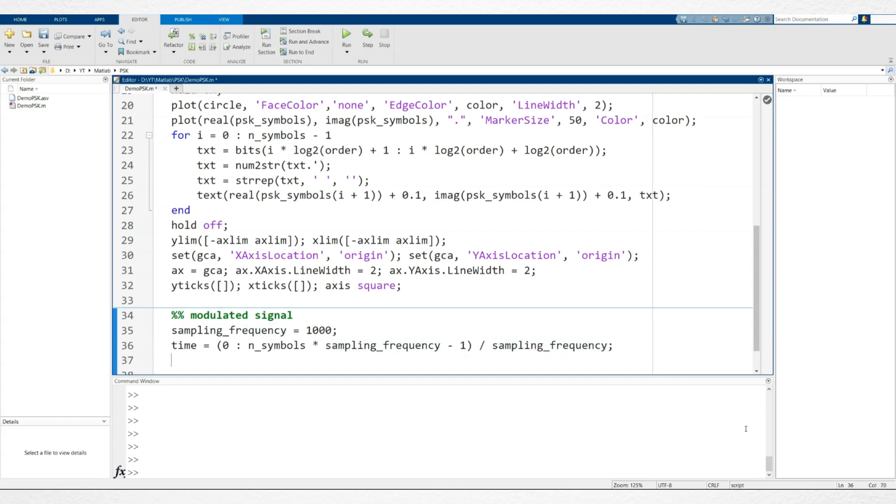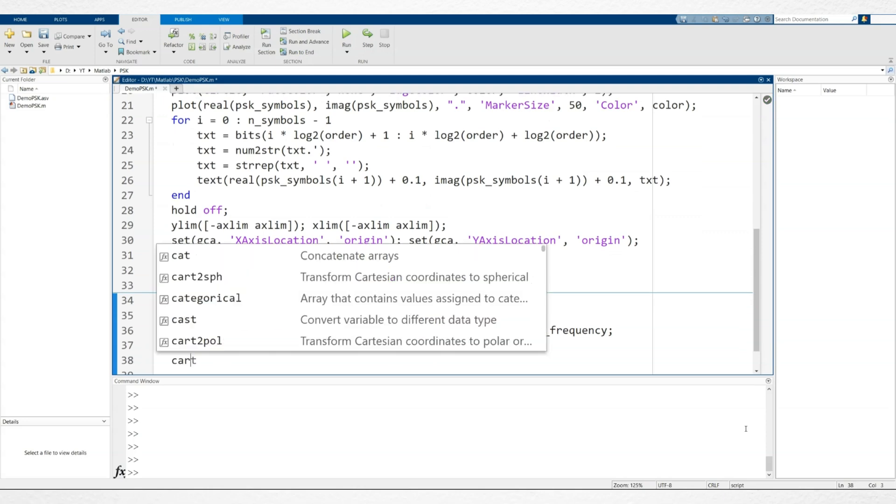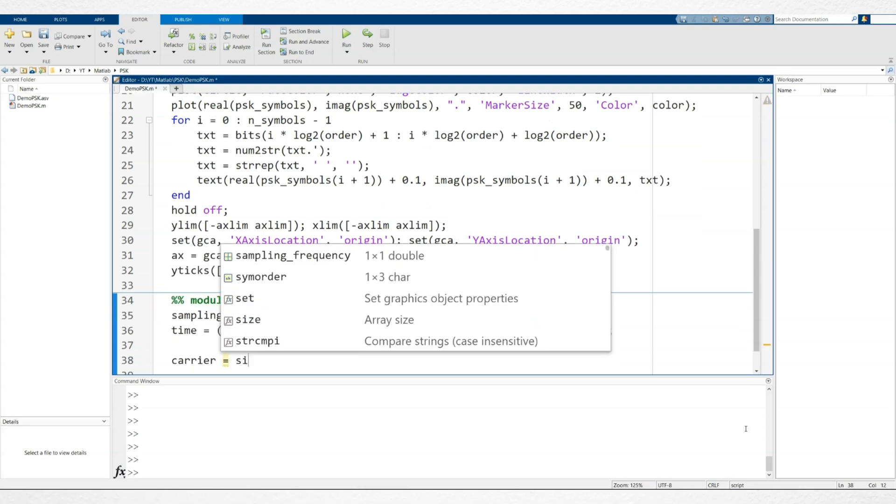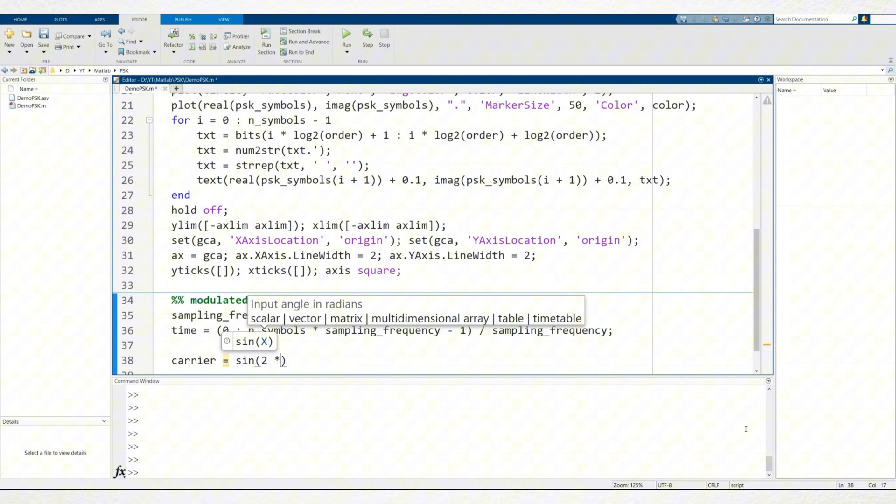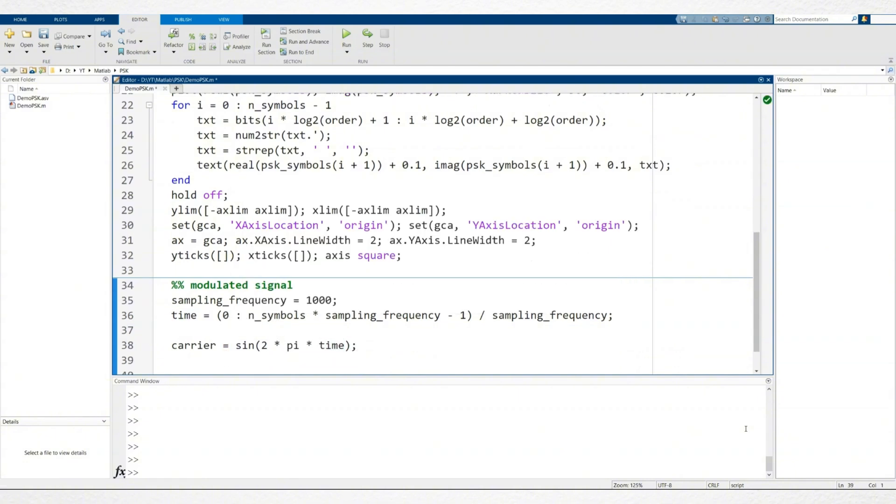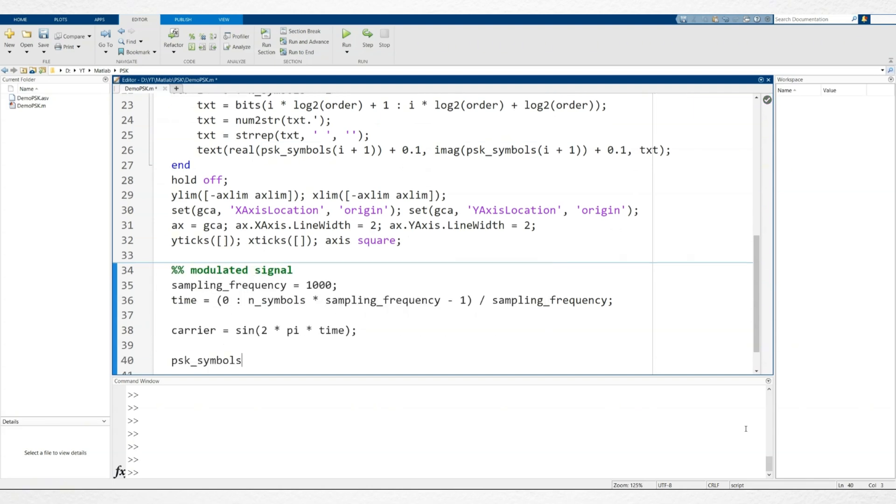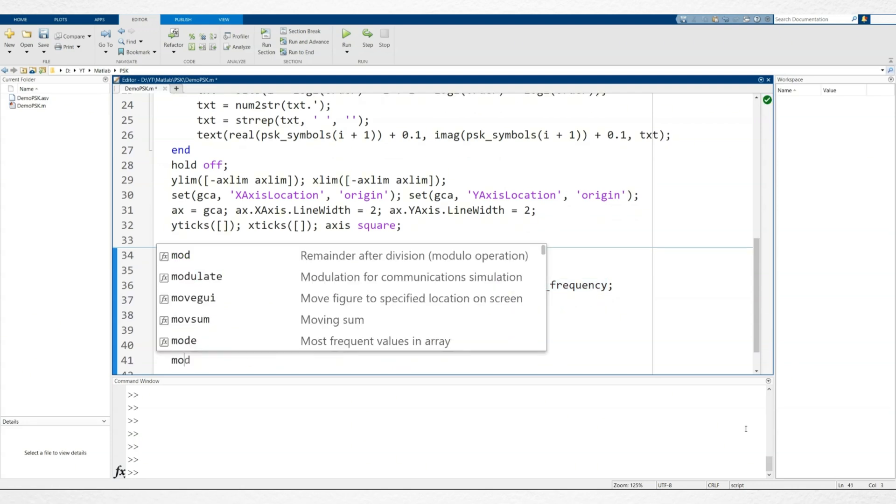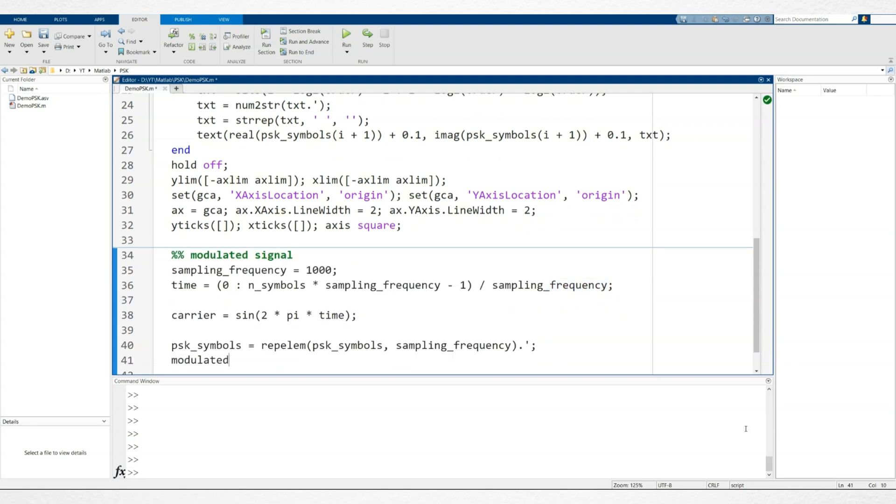Next, we generate the carrier wave using the sine function. Normally, one period of a sine wave spans from 0 to 2pi, but to scale this range from 0 to 1, we multiply the time values by 2pi. Then, we repeat each PSK symbol 1000 times to match the length of the carrier wave, ensuring both variables have the same size. Finally, we generate the modulated signal by multiplying the PSK symbols with the carrier wave.